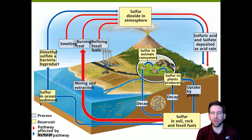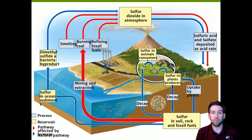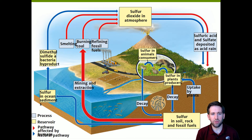However, human activities also affect the sulfur cycle. Mining and extraction associated with fossil fuels leads to smelting — the melting of metals — burning coal, and refining fossil fuels, all of which increase the amount of sulfur dioxide and produce even more acid rain than would occur naturally.